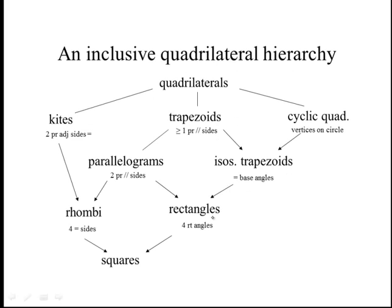So if you use at least one pair of parallel sides for a trapezoid, and you define a kite as two non-overlapping pairs of adjacent sides congruent, then a rhombus with four congruent sides is a kite. Rectangles are defined as having four right angles. A trapezoid then is at least one pair of parallel sides, and a parallelogram with two pairs of parallel sides is automatically a trapezoid. This is a much more inclusive hierarchy, and again, if you can prove something true about any trapezoid, then it's automatically true of parallelograms.